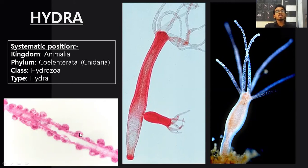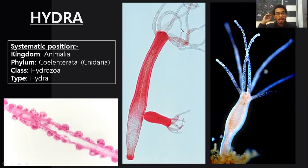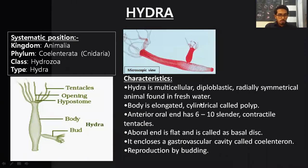These cells are commonly called stinging cells and they help in paralyzing the prey. If a small fish, larval fish, or small crustaceans come nearby, these tentacles function like a whip, and when it gives a stroke, the stinging cells help in paralyzing that particular prey, and thereby the tentacles help in grabbing and engulfing the prey. The aboral end is flat and is called the basal disc, which helps in attachment of the entire body to a substratum.